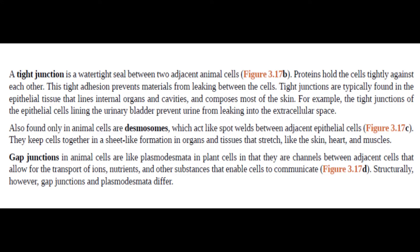A tight junction is a watertight seal between two adjacent animal cells. Proteins hold the cells tightly against each other. This tight adhesion prevents materials from leaking between the cells. Tight junctions are typically found in the epithelial tissue that lines internal organs and cavities and composes most of the skin. For example, the tight junctions of the epithelial cells lining the urinary bladder prevent urine from leaking into the extracellular space.